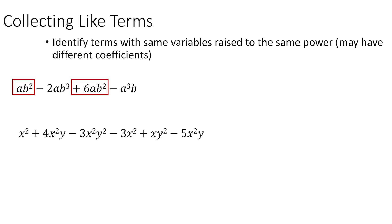Here's another example, and I'm not going to look at the coefficients as we go. We've got x squared, x squared y, x squared y squared, x squared, x squared y squared, x squared y. Going through those terms, I can see there's a pair of x squareds — one has a coefficient of one, one has a coefficient of minus three — and there's a pair of x squared y terms, one with a coefficient of four and the other with a coefficient of minus five.